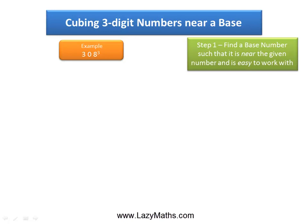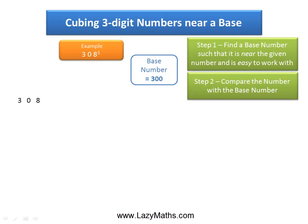The first step is to find a base number — a number that is near 308 and easy to work with. In this case, 300 is the base number. The next step is to compare 308 with 300: 308 minus 300 equals positive 8, and the plus sign is because 308 is more than 300.